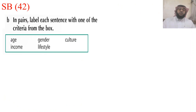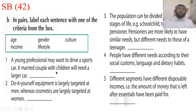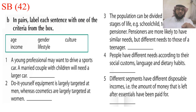Exercise, page number 42. In pairs, label each sentence with one of the criteria from the box — سنقرأ كل جملة ونعطيها واحدة من المعايير الخمس: age, income, gender, lifestyle, culture. Number one: A young professional may want to drive a sports car. A married couple with children will need a larger car. هالاحتياجات متعلقة بـ lifestyle — طريقة الحياة تختلف بين الأعزب والمتزوجين واحتياجاتهم.